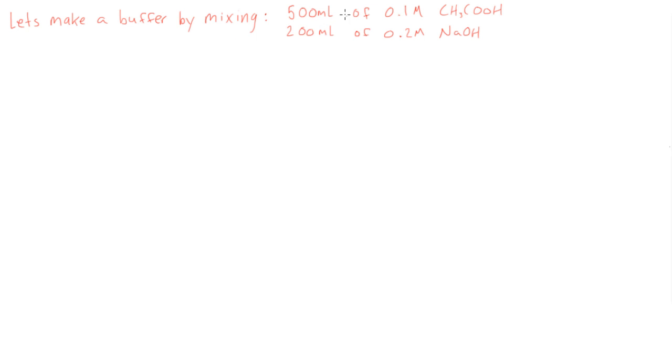First of all, let's figure out how many moles of these we have, just to wrap our heads around this. Let's do our acetic acid here. We have 0.1 moles per liter times 0.5 liters. That's going to give us 0.05 moles of acetic acid.